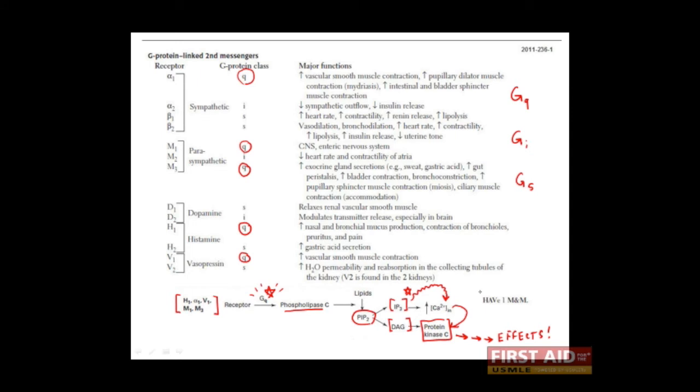You can remember this set of receptors with the mnemonic HAV1MNM. So in summary, when the alpha-1 adrenergic receptor, the M1 or M3 muscarinic receptor, the H1 histamine receptor, and the V1 vasopressin receptor bind to their respective ligands, there is a conformational change in the receptors which then activates the GQ protein. This GQ protein can then activate the pathway that we've just discussed.